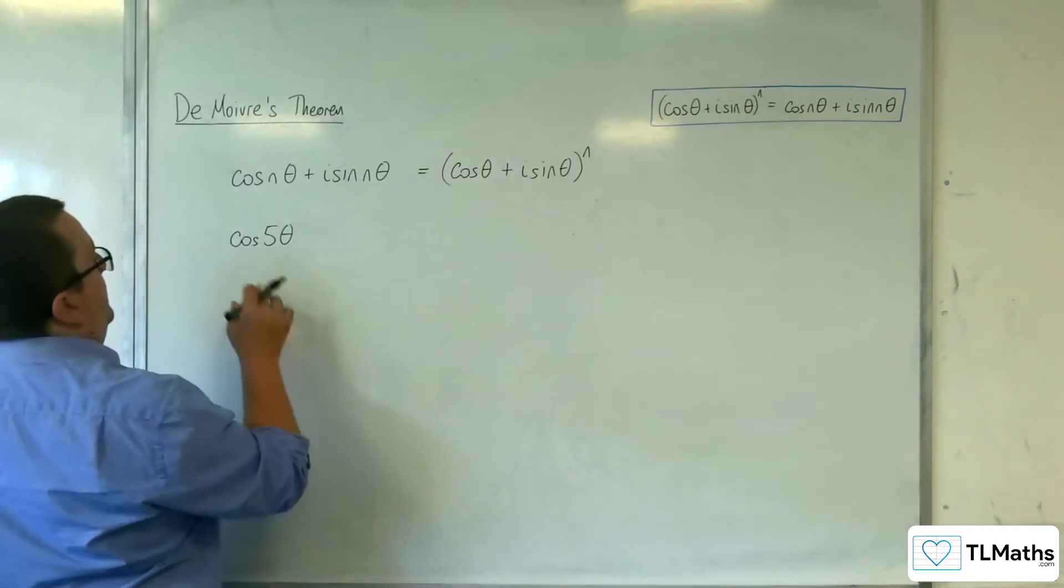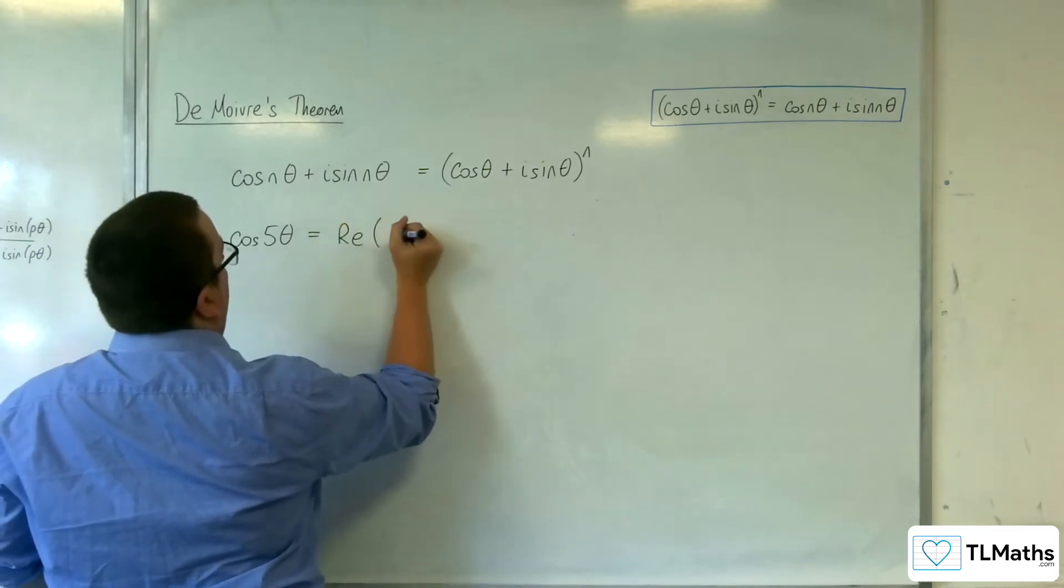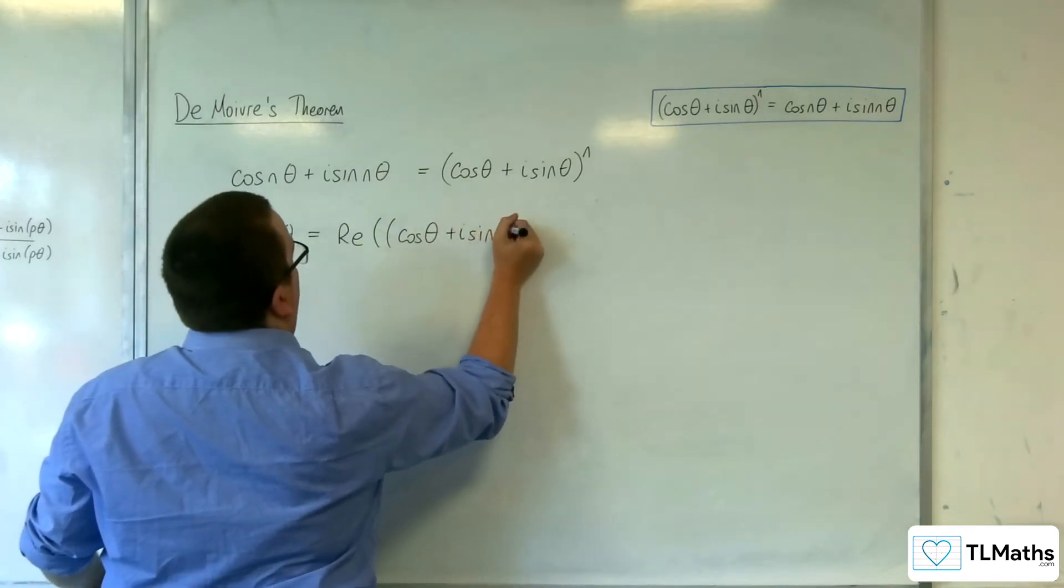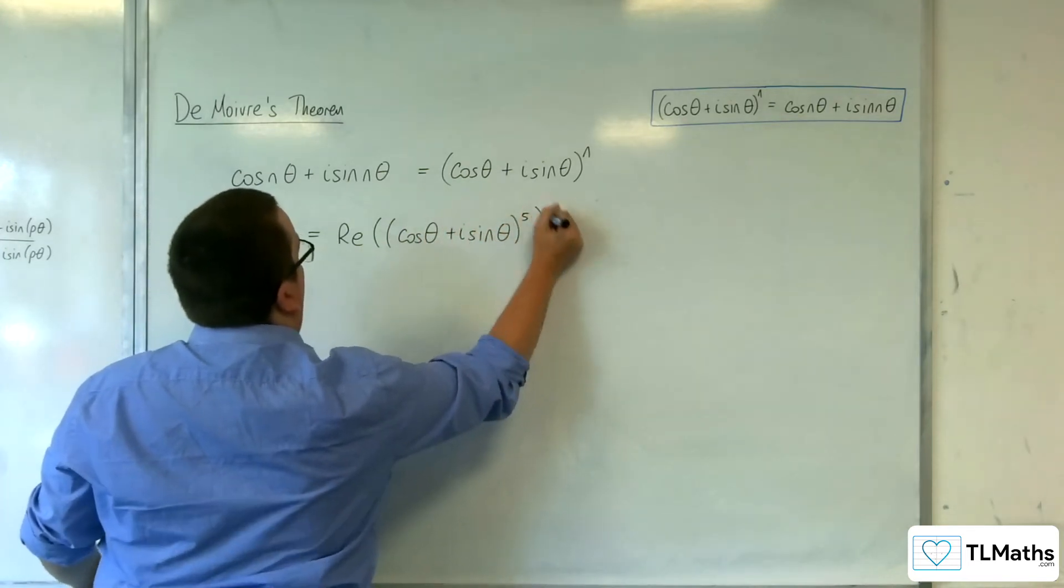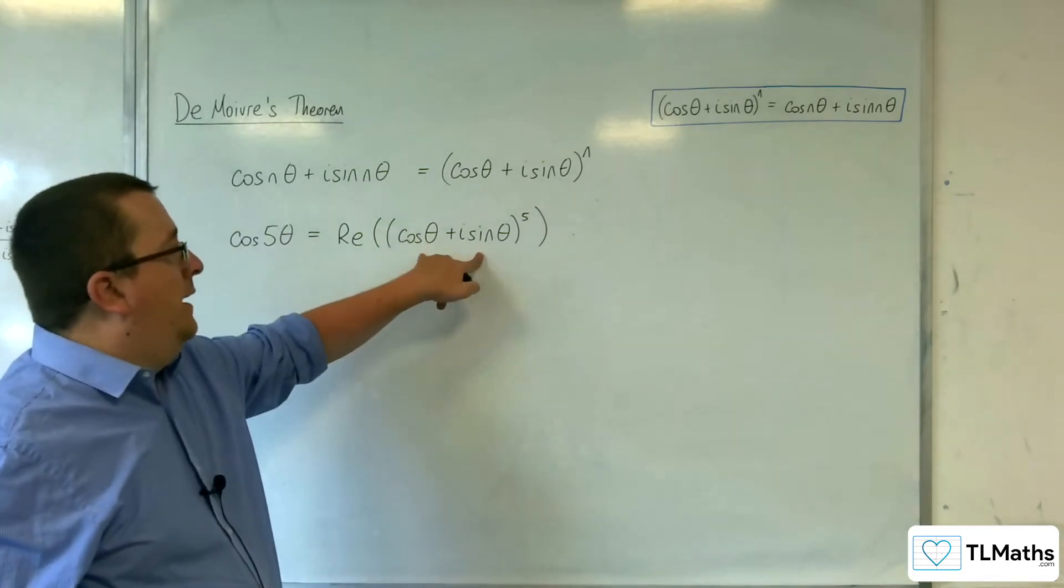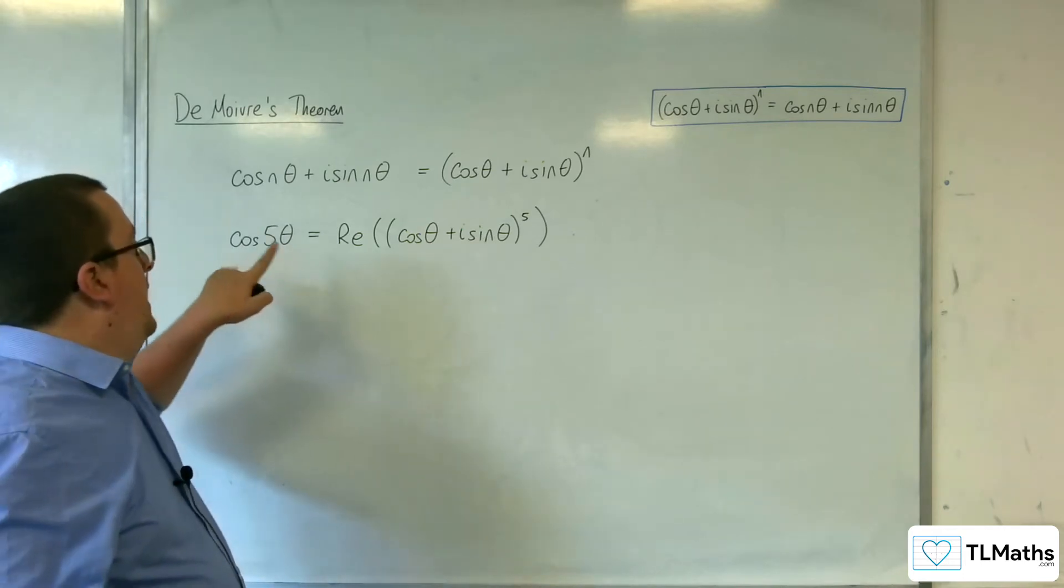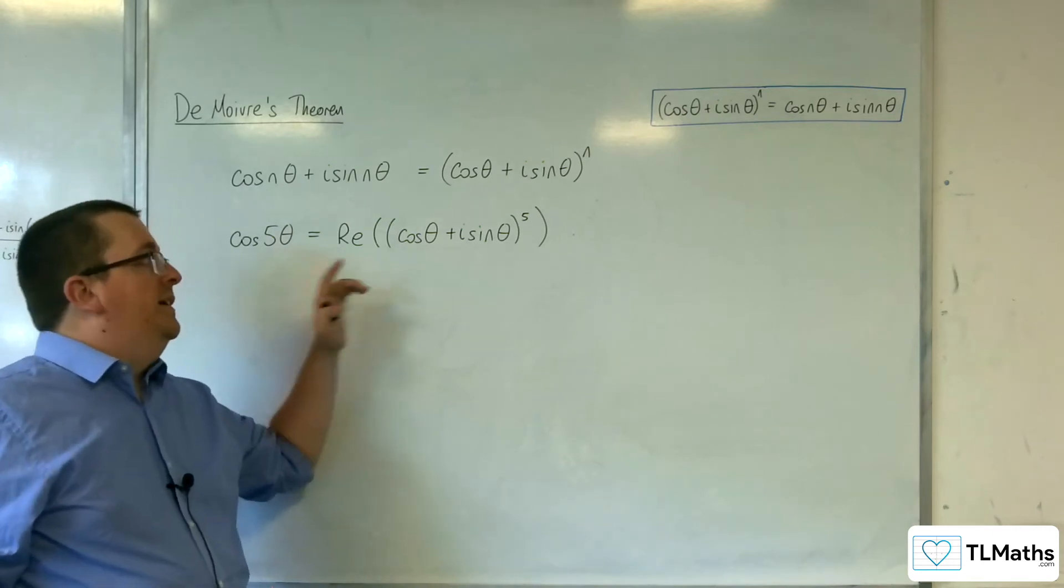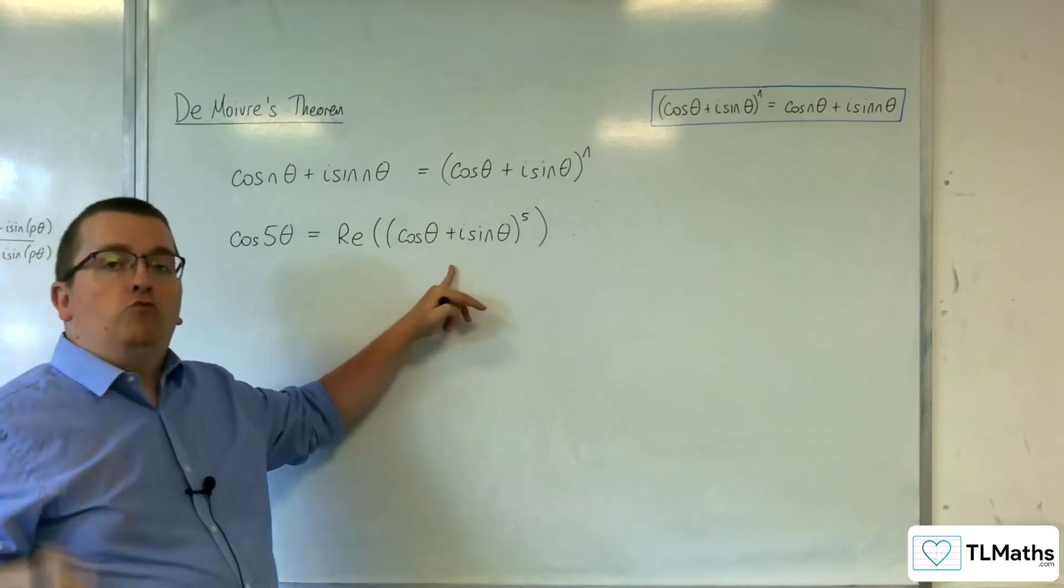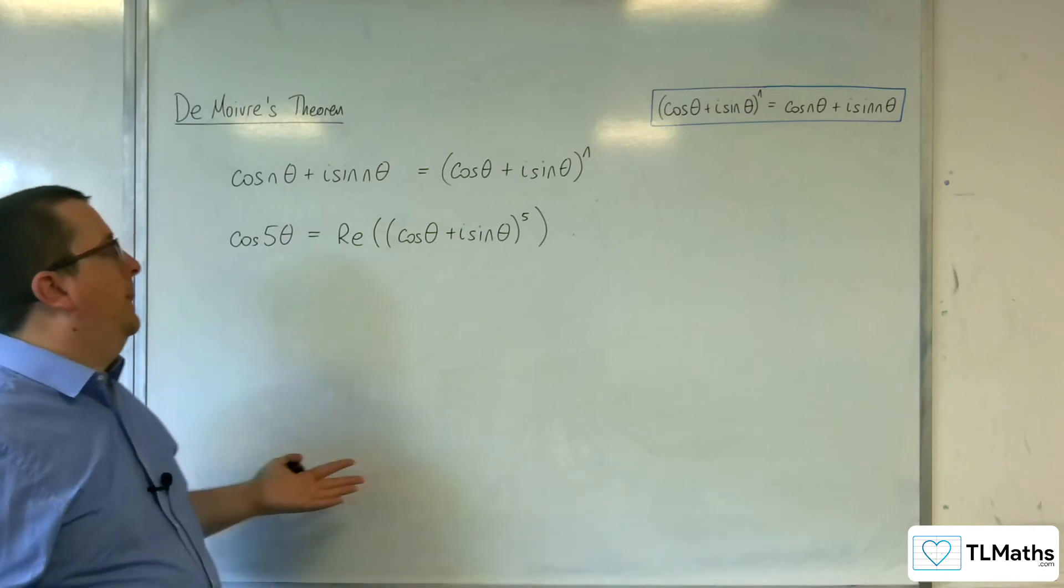So that must mean that cosine of 5 theta must be the same as the real part of cosine theta plus i sine theta to the power of 5. So if I could work out that and expand that out, and just take the real part, then that will be my cosine 5 theta. Now, I may well get some sine theta in there, which hopefully I can replace. So, if I get sine squared, I can replace it with 1 minus cosine squared, for example.